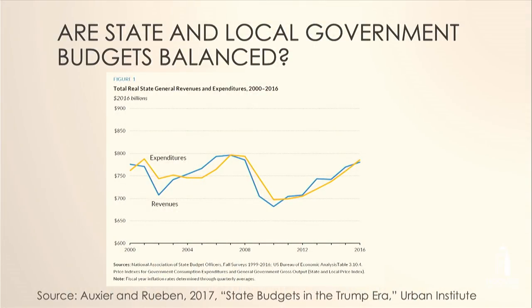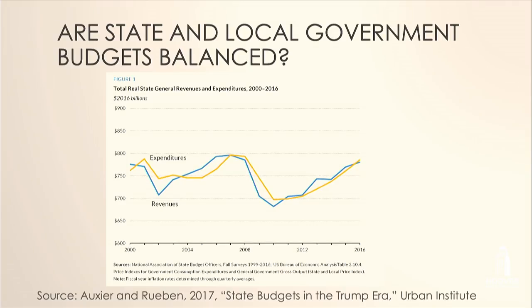They collect about $2.2 trillion themselves, and the rest comes as transfers from the federal government. A key question that motivated this work is: are state and local government budgets balanced? Generally speaking, a balanced budget means you're spending about as much as you're taking in. If your expenditures exceed income, you're running a deficit. If income exceeds expenditures, you have a surplus — and this applies to governments just as to households.